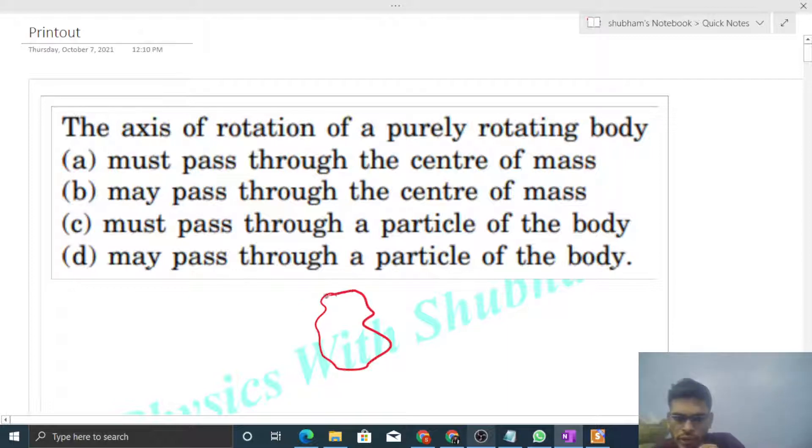A body which is purely rotating means all the particles of this body must move in a circle. The path should be a circular path. So that is what we call pure rotation.